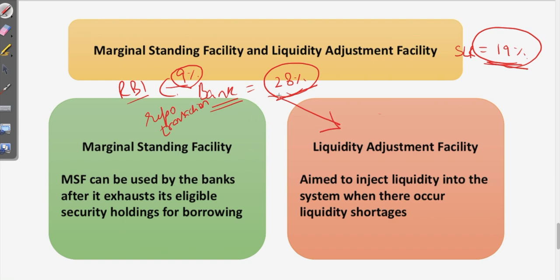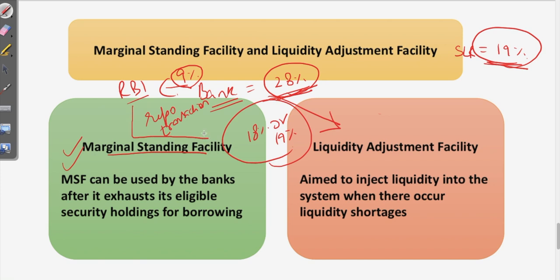But what if the bank holds only 18% or 19% in government securities? It has no securities to pledge to RBI. In such cases, RBI provides the marginal standing facility (MSF), which can be used when liquidity has dried up in the banks. However, RBI lends under MSF at a rate higher than the repo rate. Students often get confused between LAF and MSF, so do ask any further doubts in the comments below.